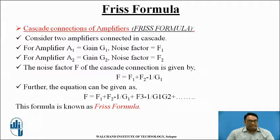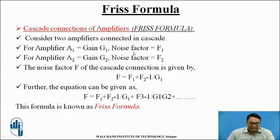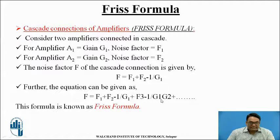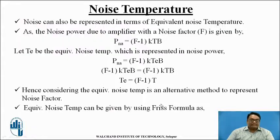When amplifiers are connected in cascade, we use the Friis formula. Amplifier A1 has gain G1 and noise factor F1; amplifier A2 has gain G2 and noise factor F2. The total noise factor F for cascaded amplifiers is F = F1 + (F2−1)/G1 + (F3−1)/(G1·G2), where G1 and G2 are the power gains of amplifiers 1 and 2 respectively.